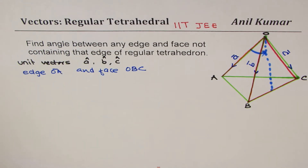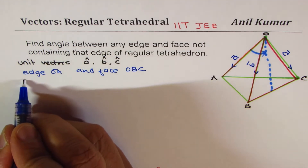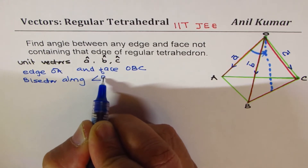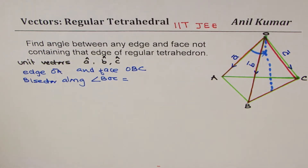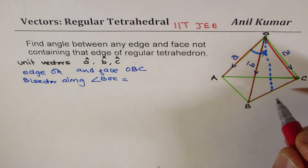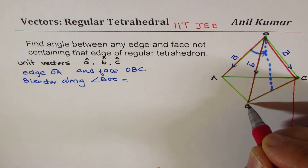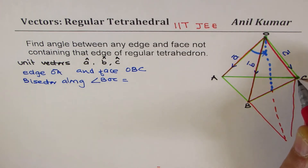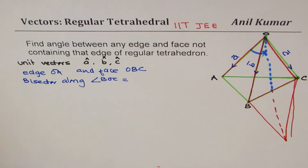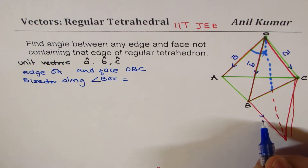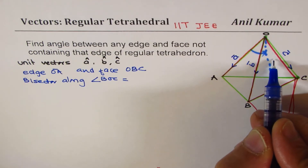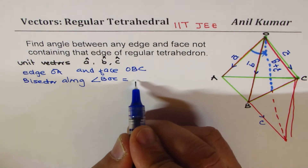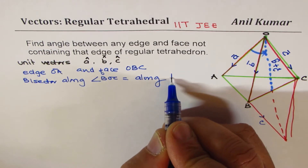The bisector is along angle BOC. If you extend the parallel lines, you can see that this bisector line is parallel to b+c. So the bisector along BOC is along the vector b+c.